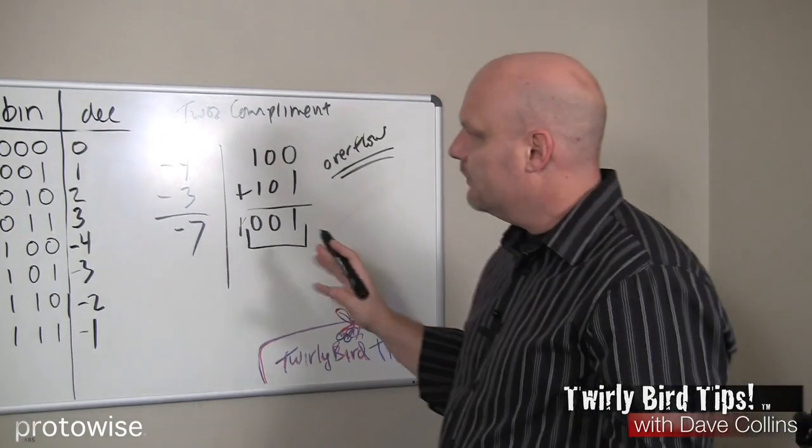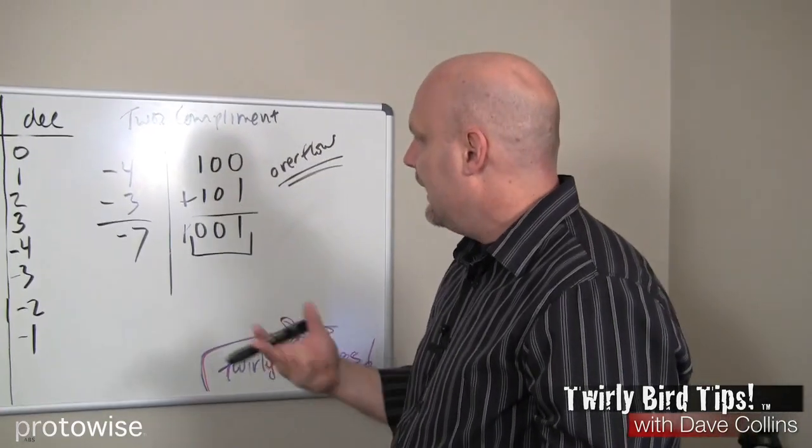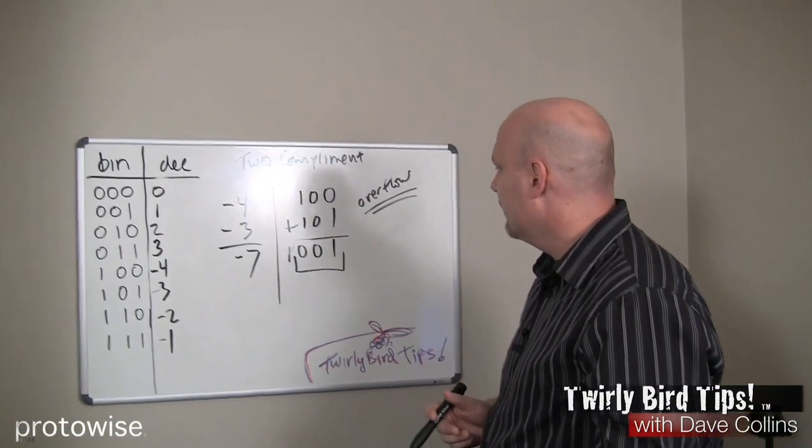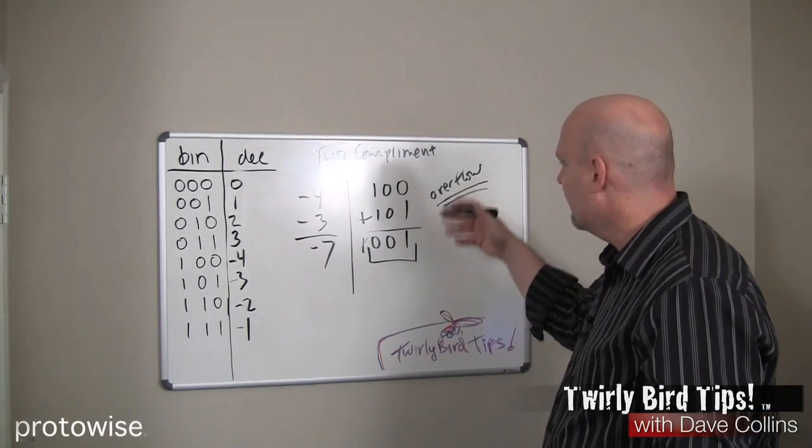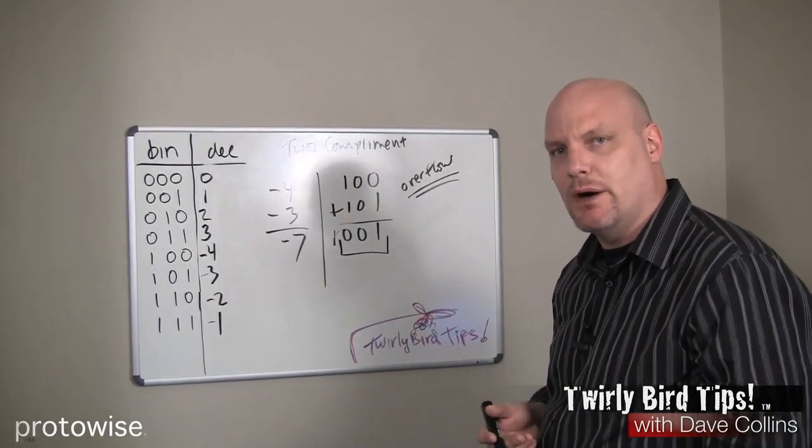So two's complement deals with the two zeros problem. We don't have two zeros. It allows us to do subtraction and addition with only addition, which makes it easier to implement in hardware. And it enables us to detect overflow conditions so that we can report error situations. Well, there you have it. Two's complement in a nutshell. Thank you for joining us and I hope you'll join us again for another episode of Twirlybird Tips.